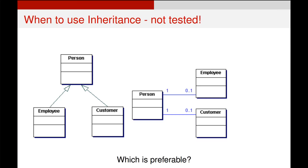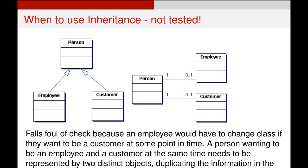Here is the same relationship implemented two different ways. On the left, we have a person superclass with two subclasses — employee and customer — that both inherit behavior and attributes from person. On the right, a person is associated with an employee and a customer. While the left might seem intuitive, the right-hand implementation is actually better. If someone needed to be both an employee and a customer, the inheritance approach would require creating another class for that combination. With the association approach, one person can be both an employee and a customer simultaneously, avoiding data duplication and data integrity problems.